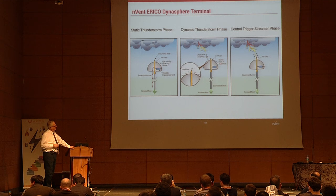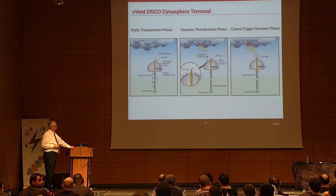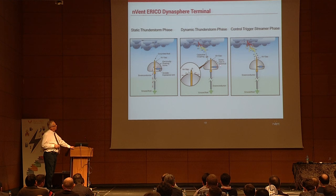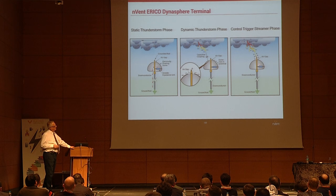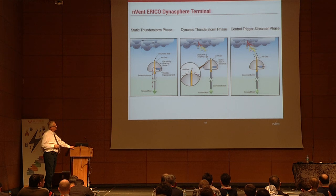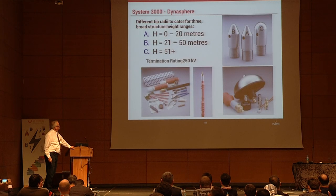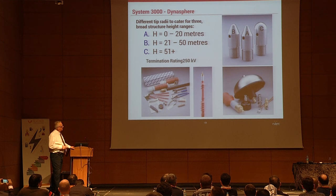When conditions are right, an avalanche event occurs — the charges are not able to bleed to earth but instead cross flash across the gap and send the upward leader. This is the controlled trigger streamer. The Dynasphere terminal has a different tip shape based on height, all part of the system, along with upper termination and other accessories.